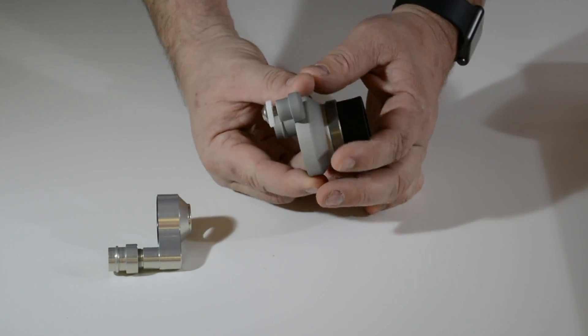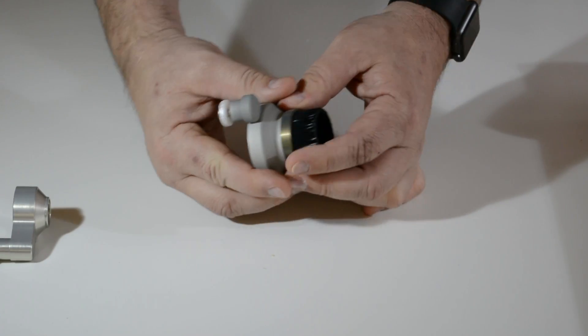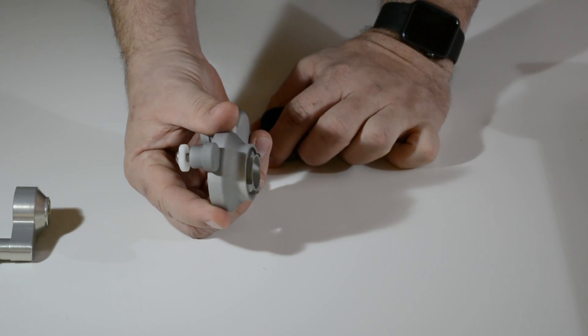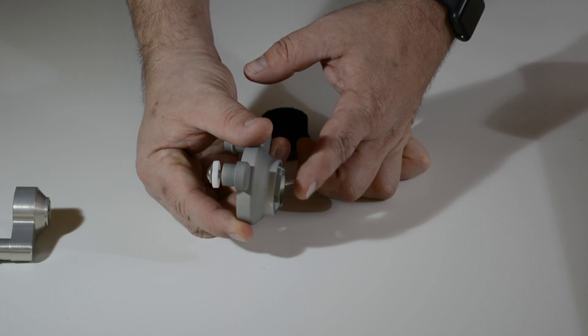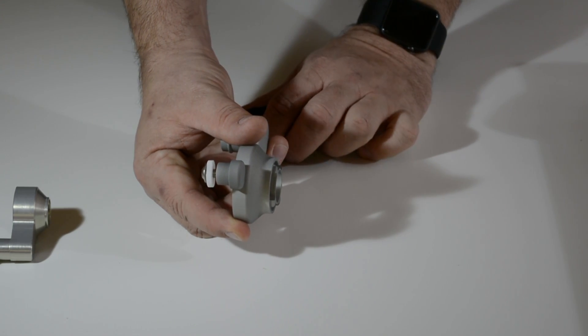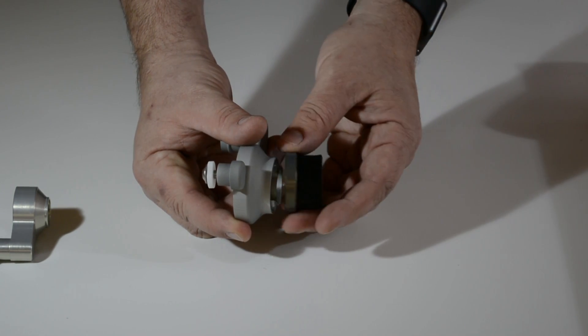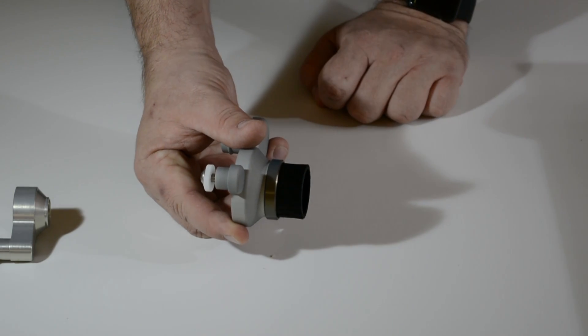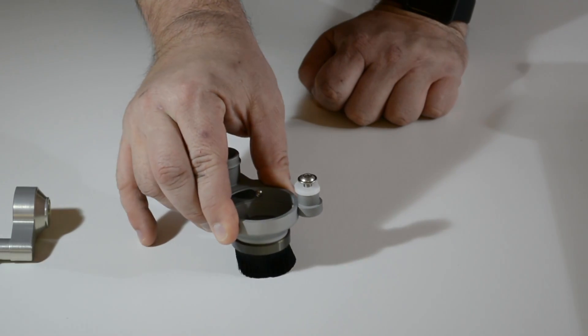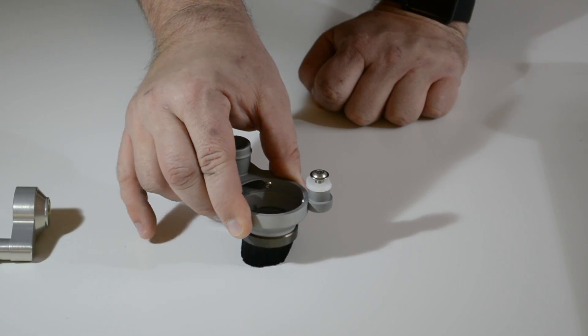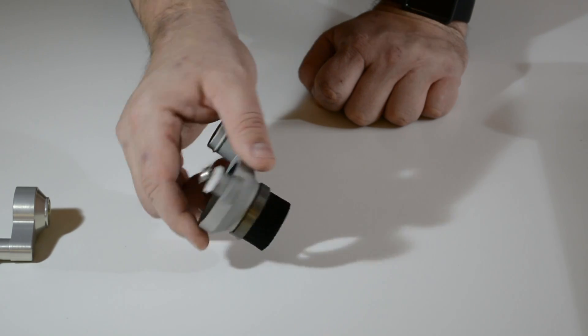This adapter features a removable brush so you can set your Z height on the work surface without the brush being in the way. Then before you start the job, the brush is held in place with a magnet. You just clip it in place and it's designed to make constant contact with the work surface to capture the majority of the debris from your job.